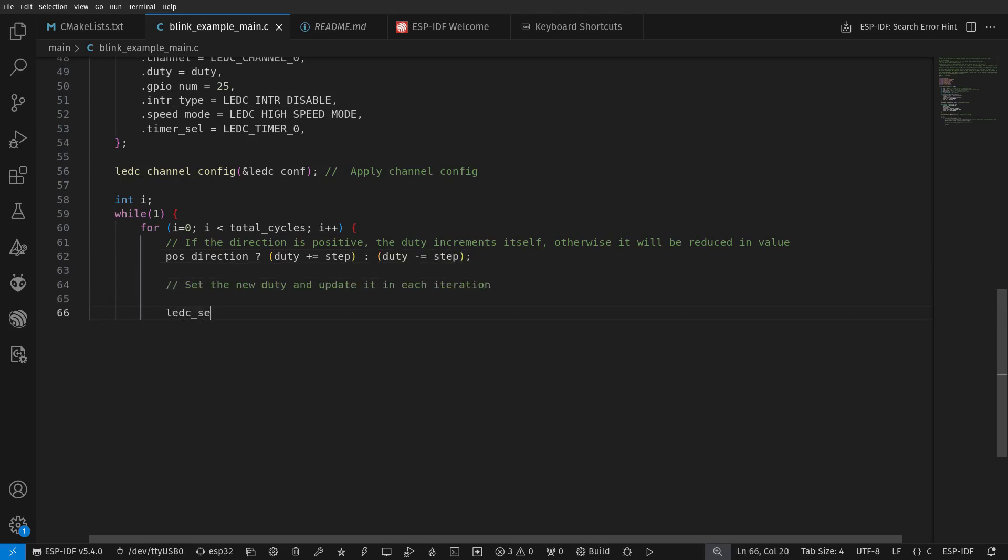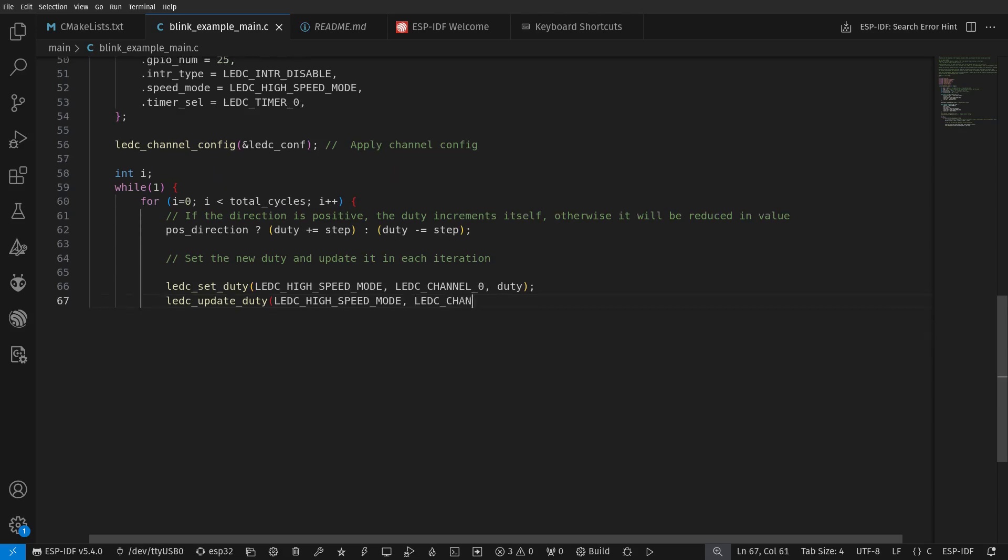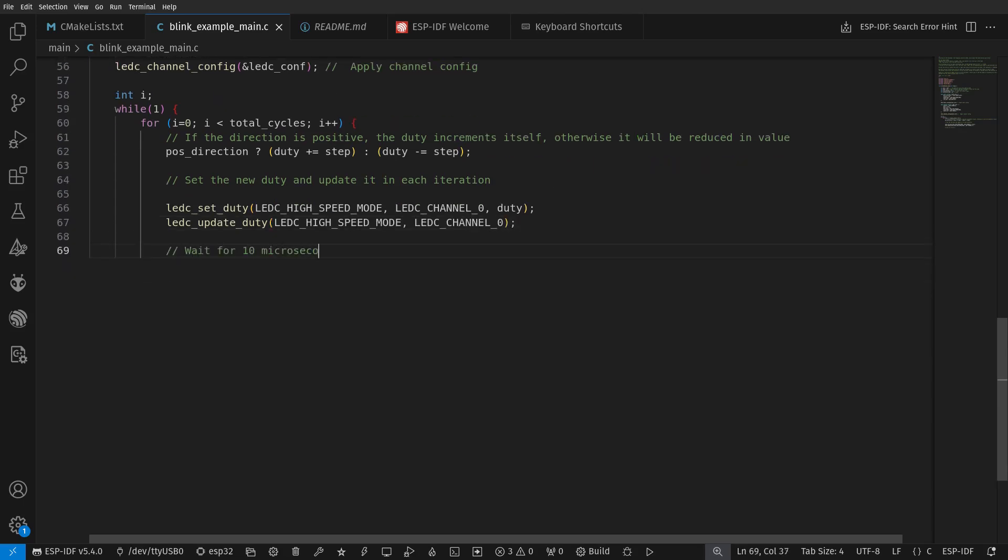The direction variable changes its value after each time the for loops end. There are 117 iterations in total per the inner loop, and each iteration takes a little more than 10 microseconds in time as there is a delay function.